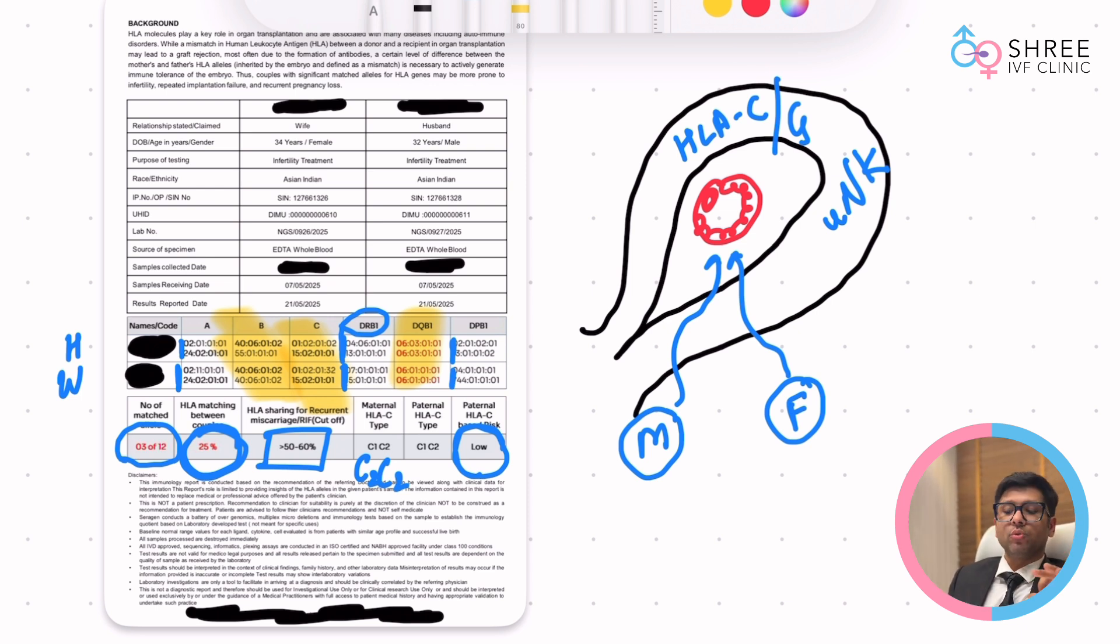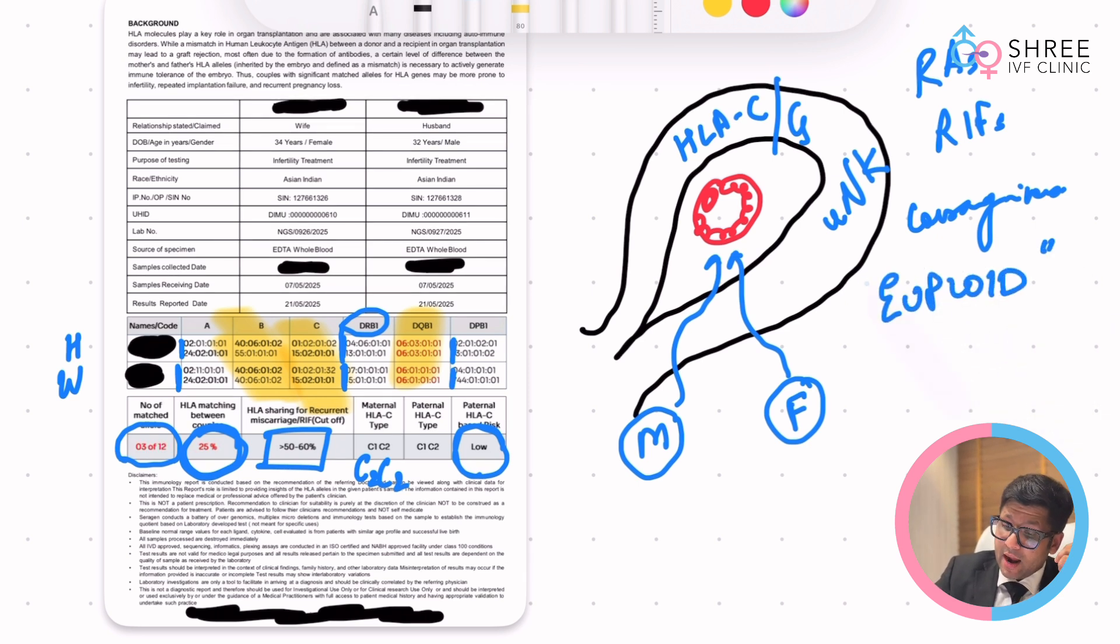This is one of the tests which you have to do when you are studying people who are having recurrent abortions or recurrent implantation failures. This is important when you have a consanguineous marriage, that is married within a family relation. This is important as long as you have a euploid embryo which has been established, and this is important if the genetic testing, that is the karyotyping of the male and female partner, is completely normal. Only in that situation does this hold any form of value.